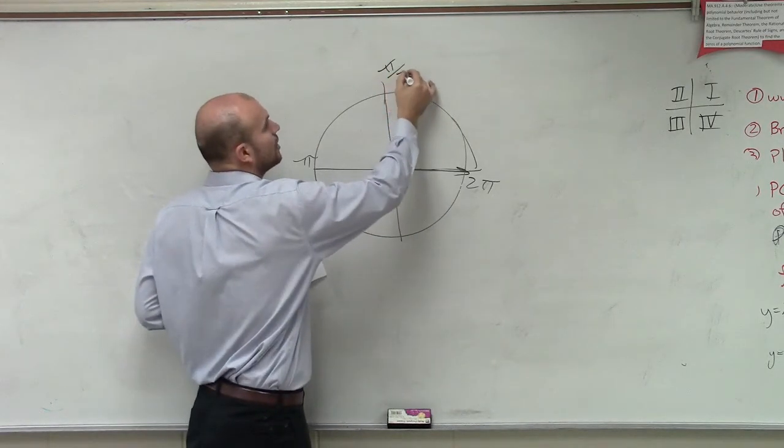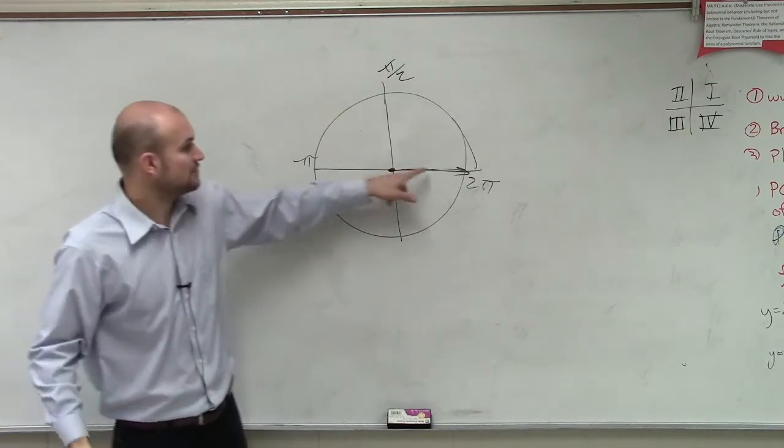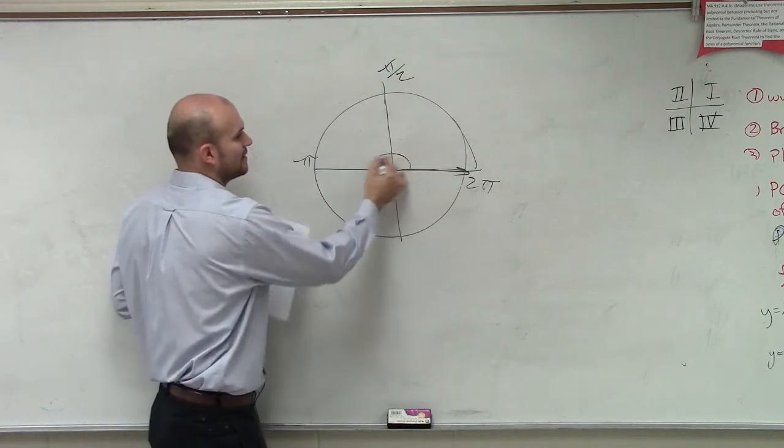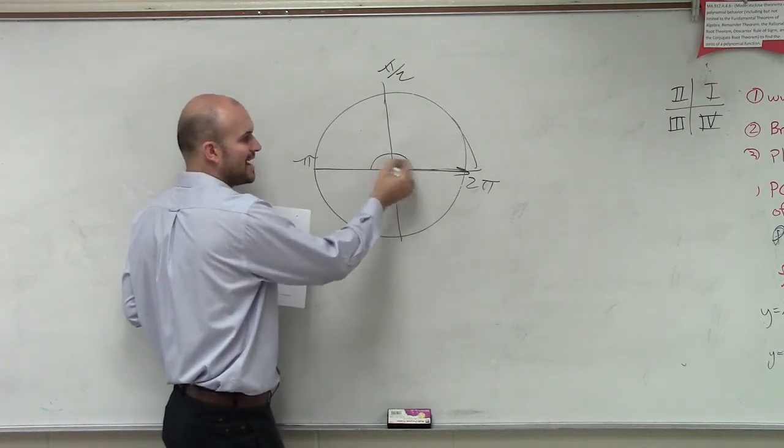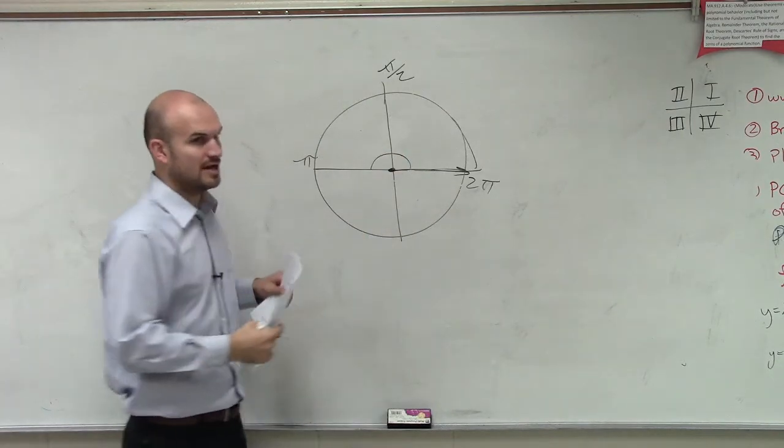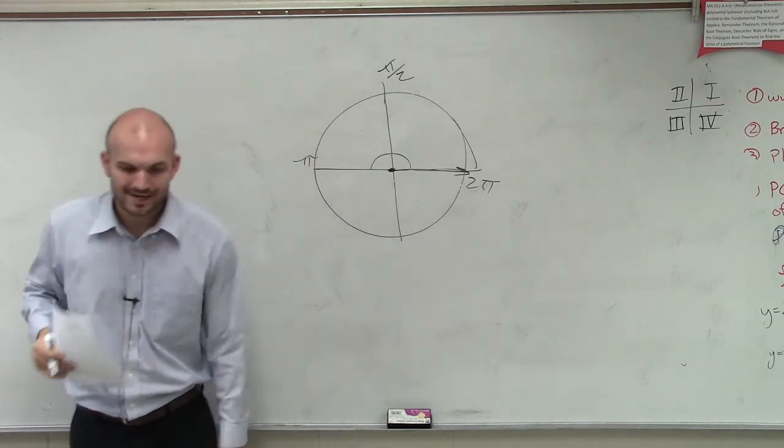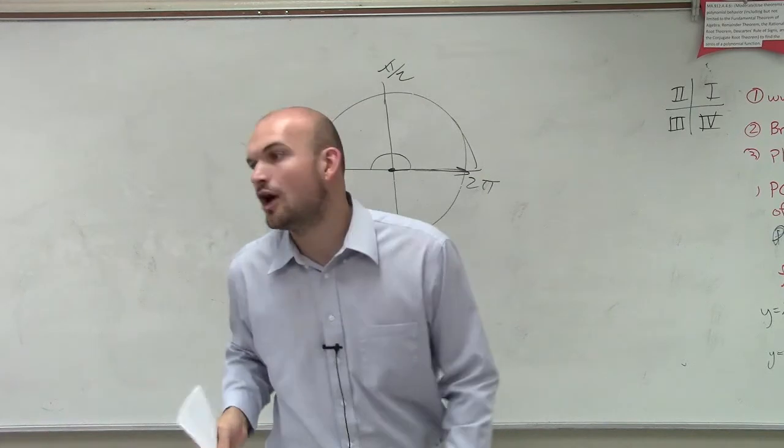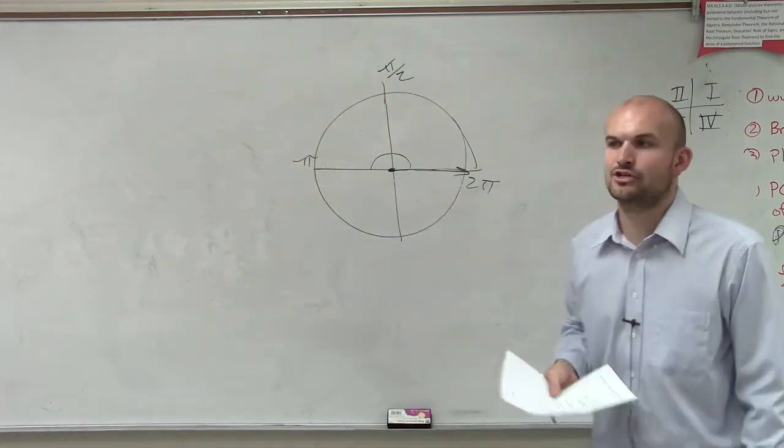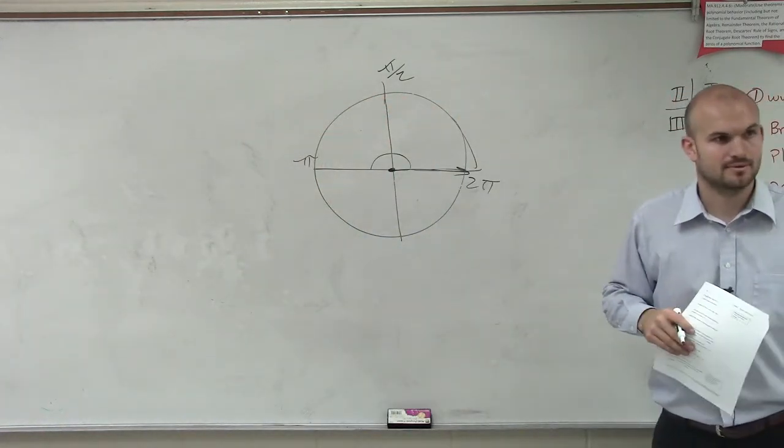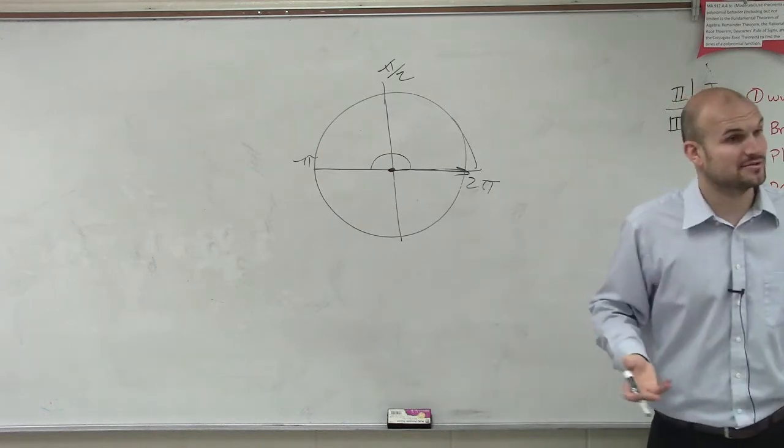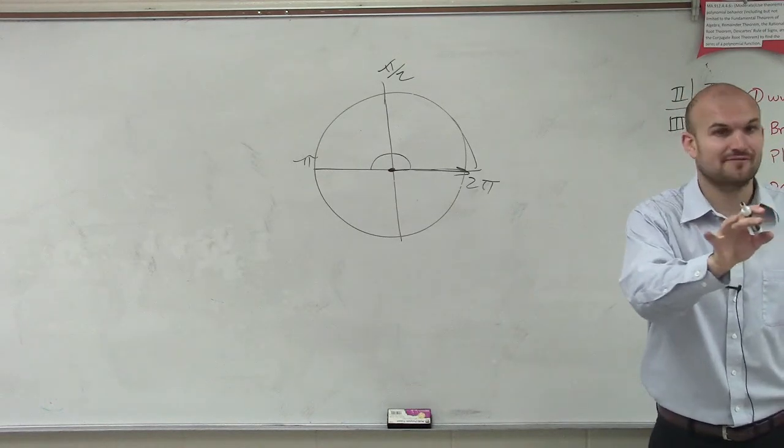Half. Because if here to here is pi, half of that is from here to here. Now, what is the measure of that? If you're going to think about degrees, what would that represent? 45 degrees. 90. 90 degrees, right? So now, let's go back to our definitions real quick. You guys remember complementary and supplementary?